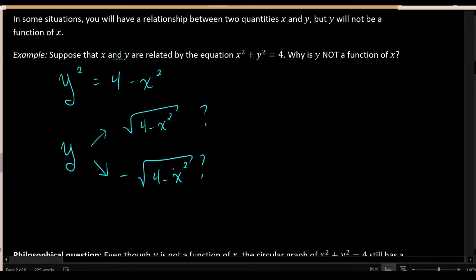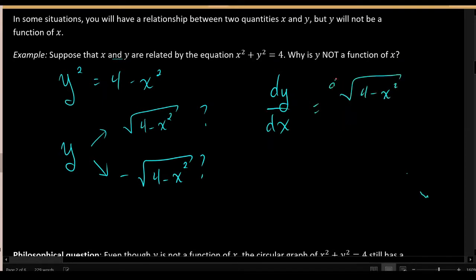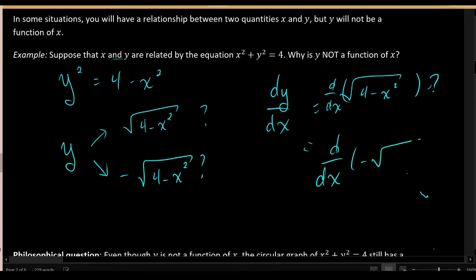This problem gets more pronounced when you consider finding the derivative of y with respect to x. Should you take the derivative of the positive square root or the negative square root? Implicit differentiation says: I'm going to give you a way to calculate dy/dx without ever having to encounter this issue, working directly from the original implicit relationship so you never have to isolate y.